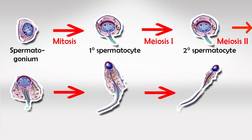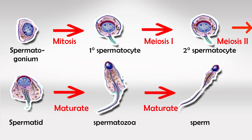We'll start off with spermatogonium, which undergoes mitosis to become spermatocyte I, or the primary spermatocyte. By meiosis I it becomes the secondary spermatocyte, and by meiosis II it becomes spermatid, which then matures and grows into a full sperm.